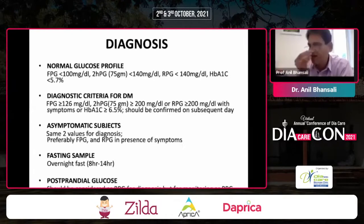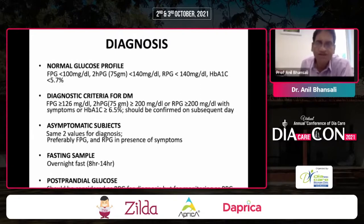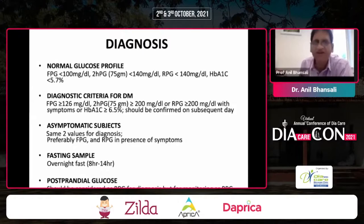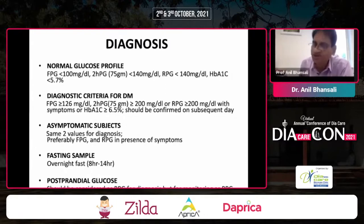We will start with the errors we make in diagnosis. The physician should be aware of the normal glucose profile. Fasting should be less than 100, the two-hour post-glucose — and remember it's post-glucose, not post-meal — should be less than 140. A random glucose, which can be taken even after meals, should be less than 140, and hemoglobin A1c should be less than 5.7 percent.